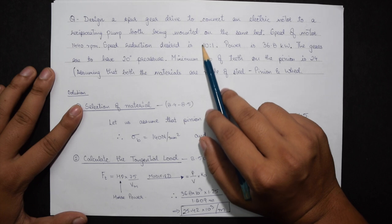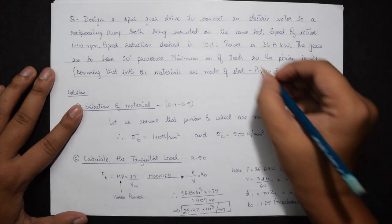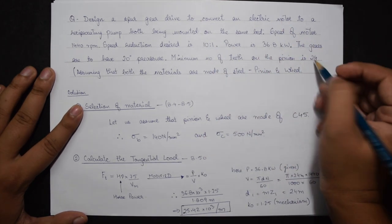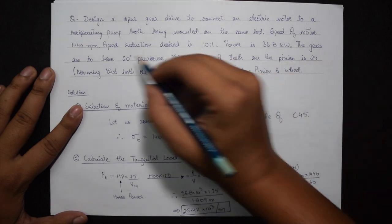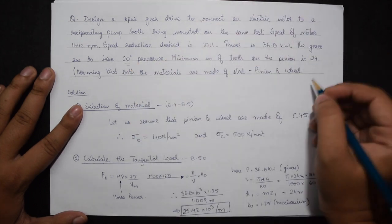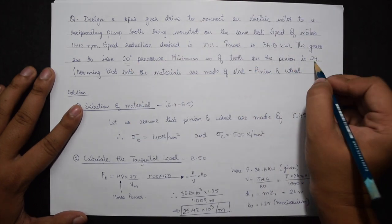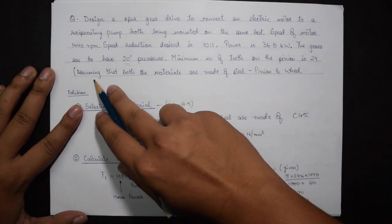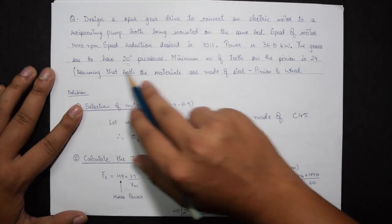Speed reduction desired is 10:1 ratio, thus i equals 10. Power is 36.8 kilowatts. These gears are to have 20 degree pressure angle, minimum number of teeth on the pinion is 24, and both the materials are made of steel.